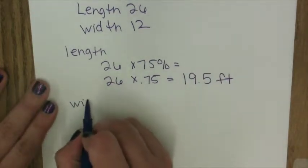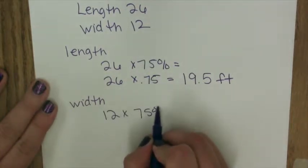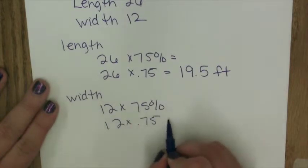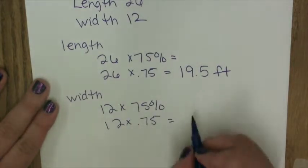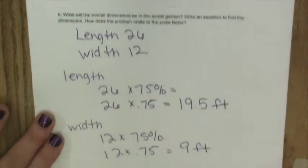Let's do our width. So 12 times 75 percent. So we're going to change this to a decimal. And when we multiply, we get that it is actually 9 feet.